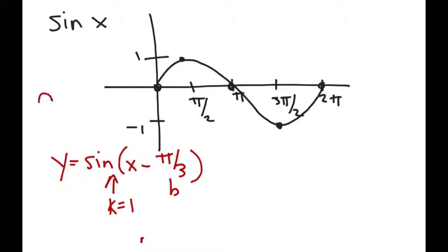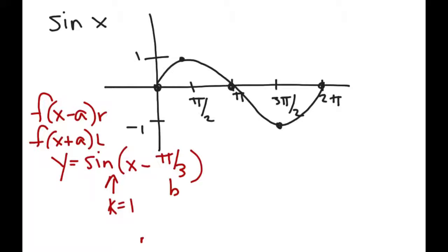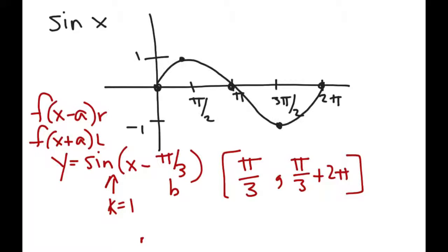This graph is being shifted b units to the right. How do I know it's to the right? Think back to this — that is our shifting to the right, and this was our shifting to the left. So I'm going to take each point on that graph and shift it π/3 units to the right, which means I'm going to start my interval at π/3 and end my interval at π/3 plus 2π, which is 7π/3.